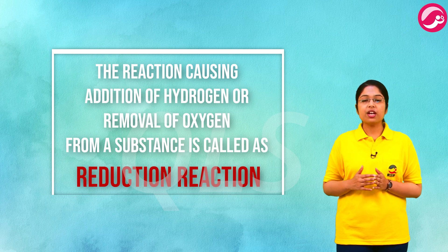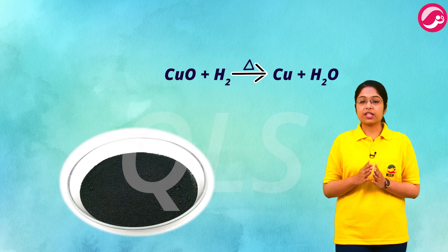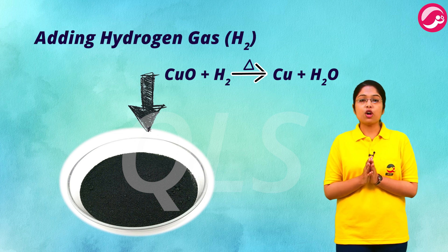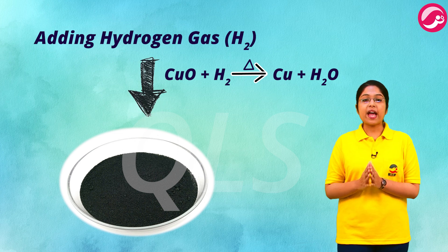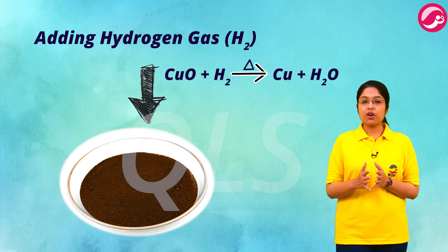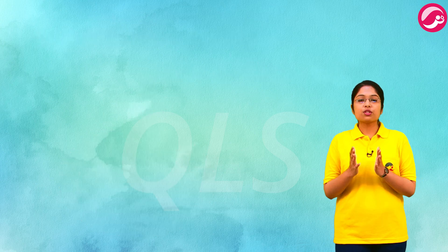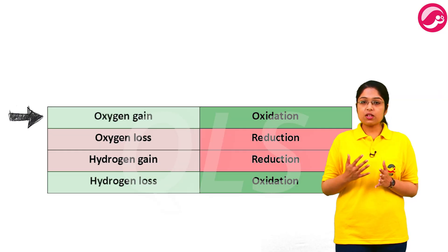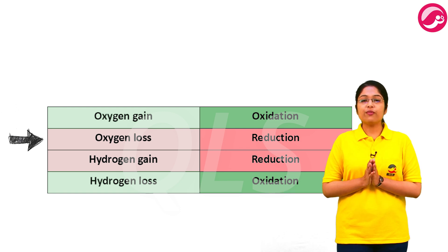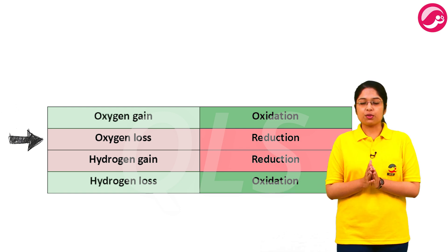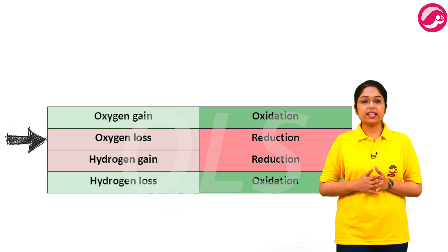The reaction causing the addition of hydrogen or removal of oxygen from a substance is known as a reduction reaction. In this case, copper oxide was exposed to hydrogen gas; the oxygen of copper oxide reacted with hydrogen to form H₂O and left behind elemental copper. So when a substance gains oxygen it is said to be oxidized.